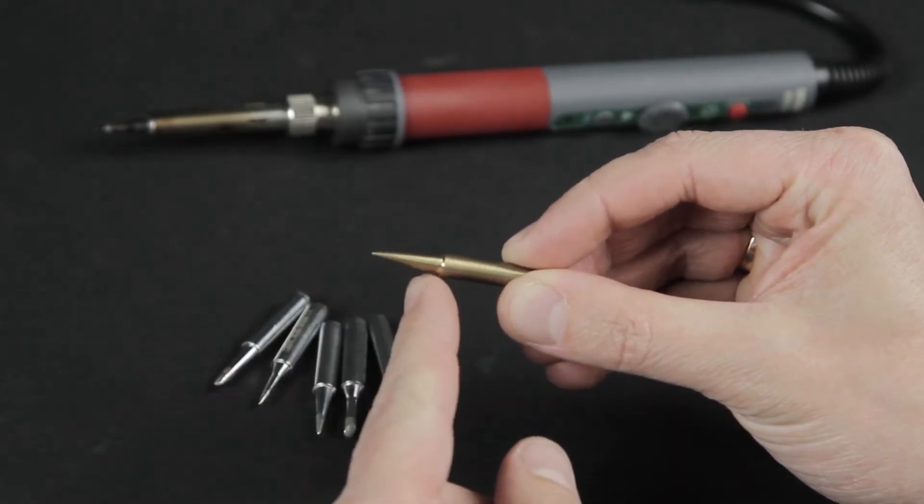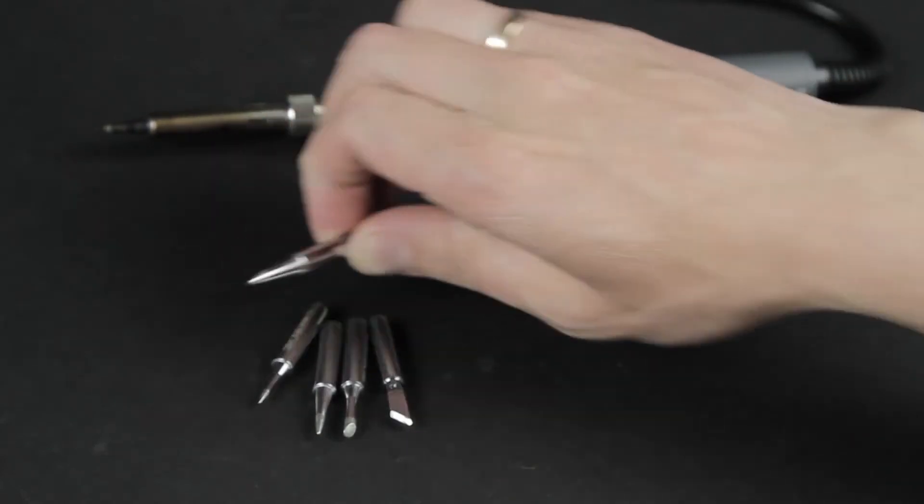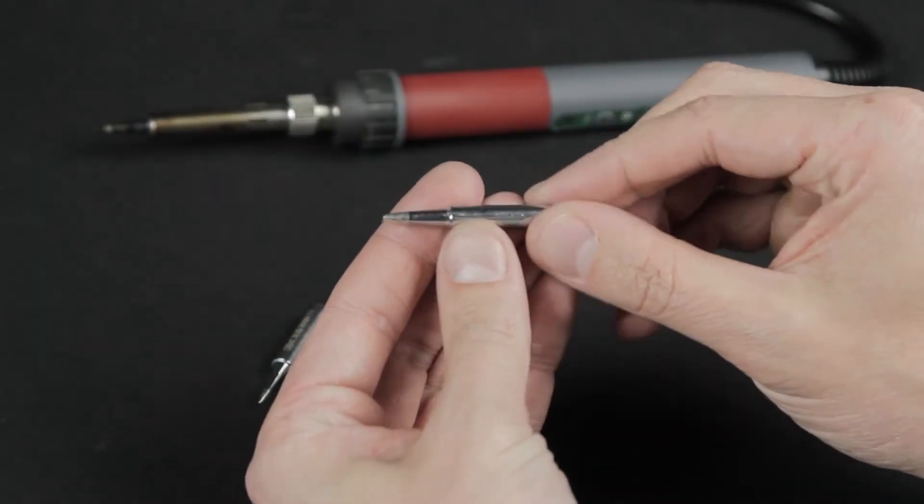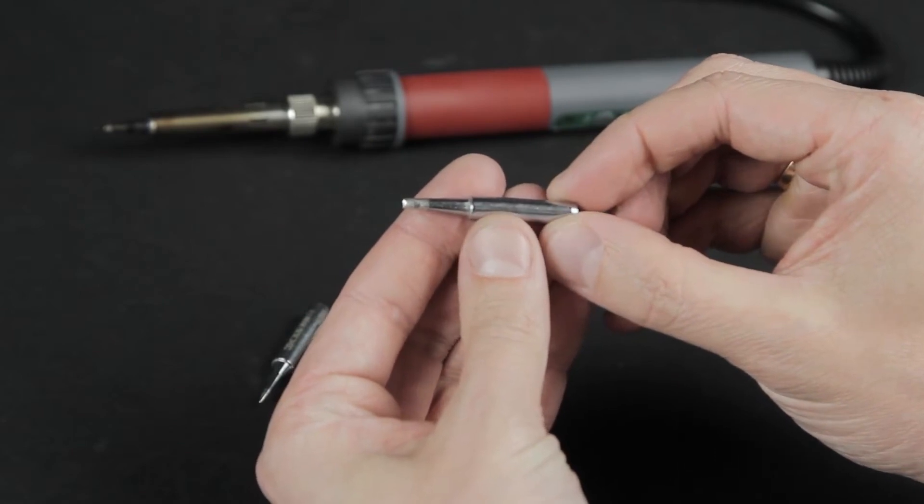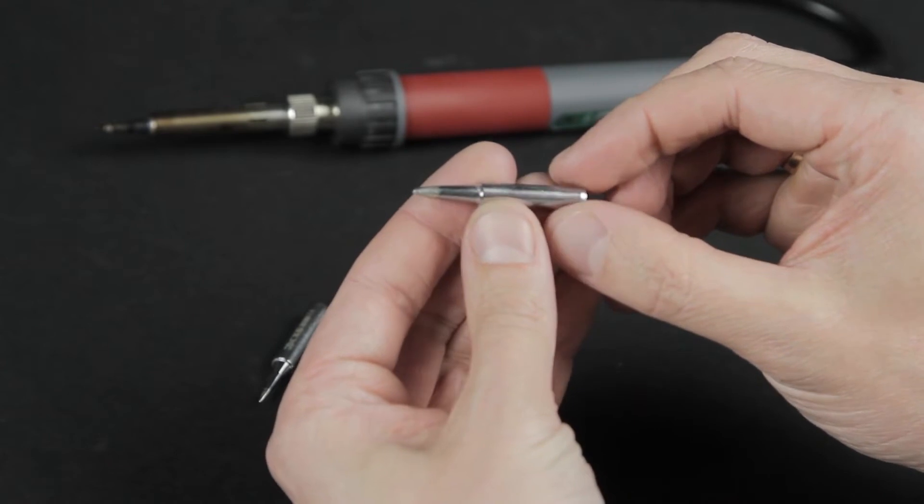They can be shaped to any form, but they quickly wear out and burn out during the soldering process. That's why you have to buy new tips. There are also durable nickel-coated tips. They have a long service life and are easy to clean,